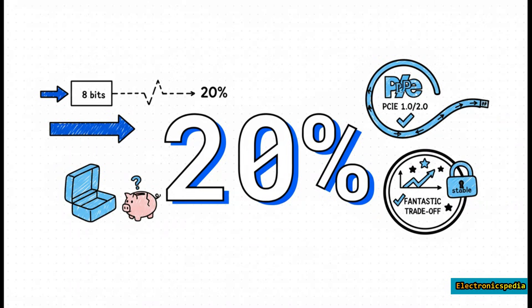There's always a catch — there's no such thing as a free lunch. Sending 10 bits just to represent 8 bits of data means you're using 20% of your total bandwidth on overhead. But back in the day, for standards like PCIe 1.0 and 2.0, that was a price well worth paying for a stable, high-speed link.